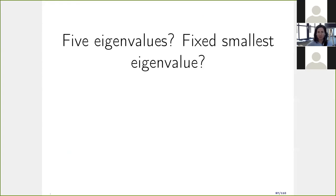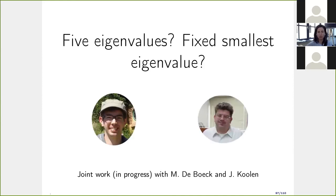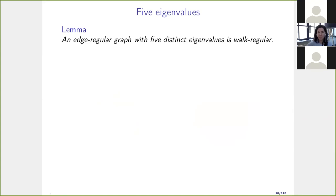After we submitted the paper, Edwin brought an alternative, shorter proof to rule out the four-eigenvalue case. Now, let me move to work in progress. The accepted paper in Designs, Codes and Cryptography covers the three- and four-eigenvalue results. We are now pushing toward the five-eigenvalue case, in joint work with Martin de Boer (recently at Eindhoven University) and Jack Kooolen. This project started about one month ago.